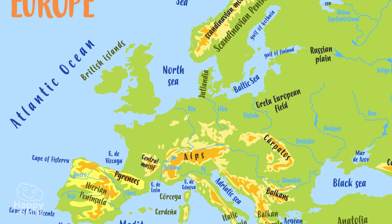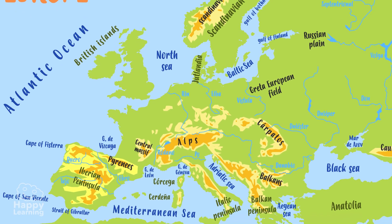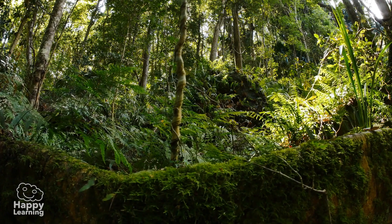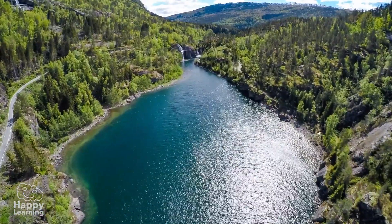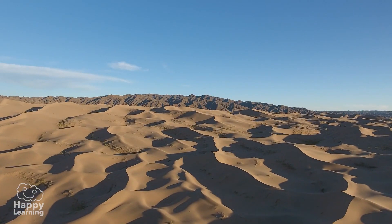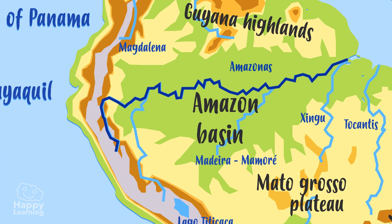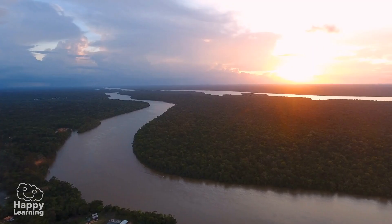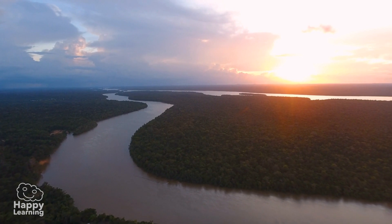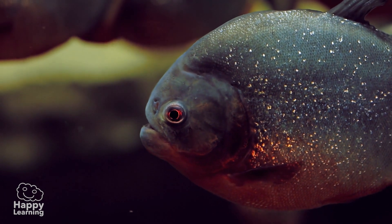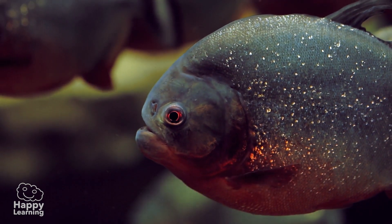Physical maps do not just show us the cities or countries, but also the mountains, rivers, and if there are jungles, lakes, or deserts. This river you can see here is the Amazon, one of the most important rivers in the world, full of piranhas and caimans.